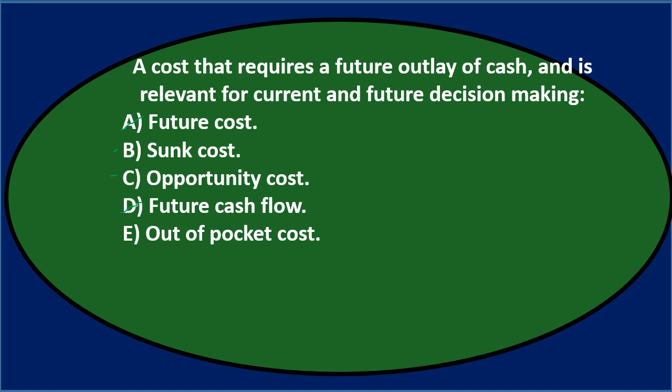Moving to E, out-of-pocket cost — that's another term we use in this area and want to be familiar with. So I'll keep B, sunk cost; C, opportunity cost; and E, out-of-pocket cost. A cost that requires a future outlay of cash and is relevant for current and future decision making is either B, sunk cost; C, opportunity cost; or E, out-of-pocket cost.